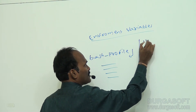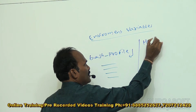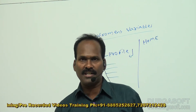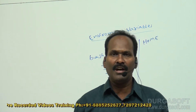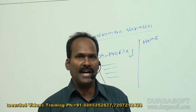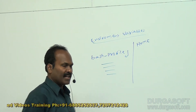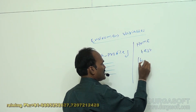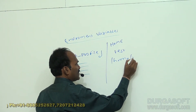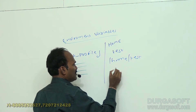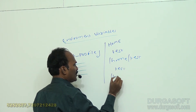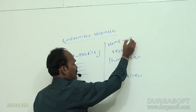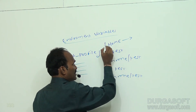There are predefined environment variables. The first one is HOME — this is going to give the complete home directory. As we discussed in the user creation class, when you create a user, the user is automatically added into the home directory. For example, if I create a user called 'test', a folder called home/test is added.